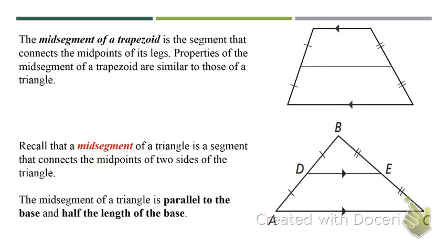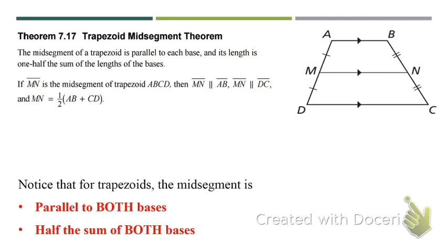The mid-segment of a trapezoid is the segment that connects the midpoints of its legs. Properties of the mid-segment of a trapezoid are similar to those of triangles — recall that DE is x and AC is 2x, so the mid-segment is parallel to the base and half the length. The trapezoid mid-segment theorem says if you add up both bases and take half, it equals the mid-segment. The mid-segment is parallel to both bases.